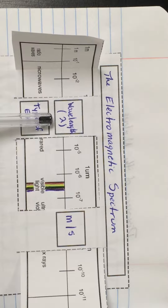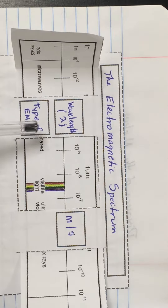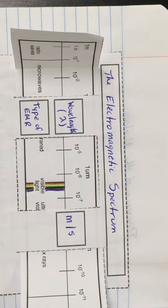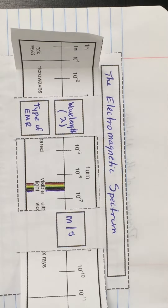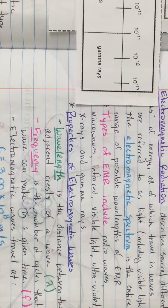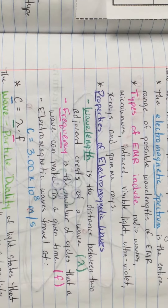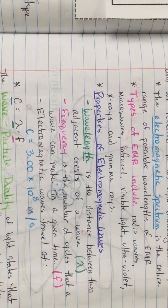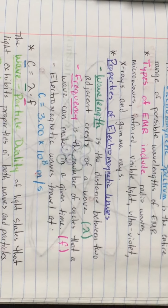Wavelength is represented by this symbol, which we call a lambda, and it's in meters. The first property of electromagnetic waves is wavelength, which is the distance between two adjacent crests of a wave — so between two of the peaks of a wave.